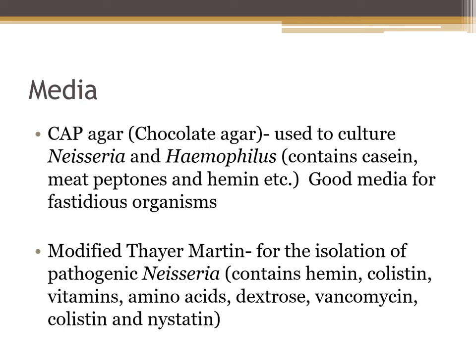Chocolate agar is used to culture Neisseria and Haemophilus — we'll discuss Haemophilus more in later units on respiratory samples. Chocolate agar contains casein, meat, peptones, and hemin, making it a good media for fastidious organisms. Haemophilus also requires the X-factor in hemoglobin that is chemically released when hemoglobin is heated. We can also use modified Thayer Martin, which suppresses non-Neisseria pathogens but grows out Neisseria gonorrhoeae and Neisseria meningitidis. The best approach is to plate samples on both chocolate agar and modified Thayer Martin, incubating in CO2 at 35 degrees with increased humidity.